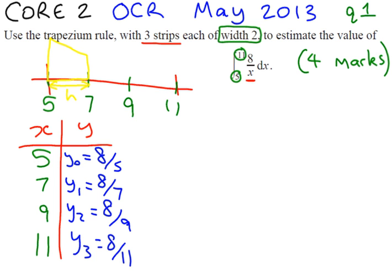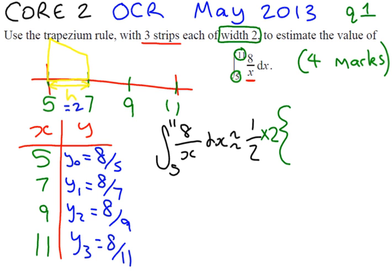Now we have all the y values we need, and because we've got the width of 2, we can plug all this information into our formula. If you look in your formula booklet, it tells you that to estimate the integral of y dx, you use one half times the height. Our height is 2, so one half times 2, times curly brackets, which is just a fancy way to put big brackets.